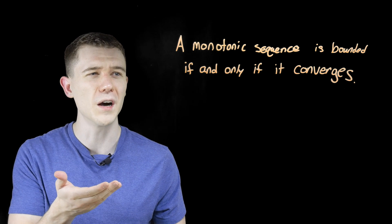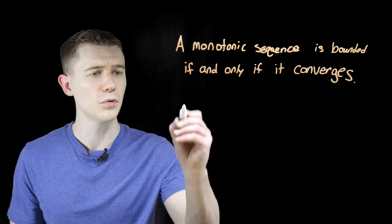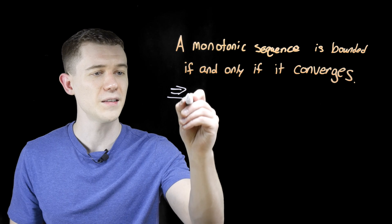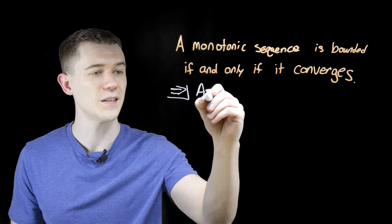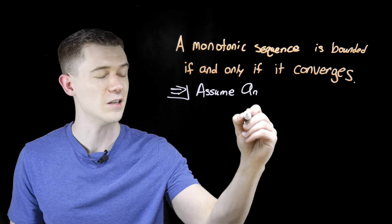What does monotonic mean? Well that means it's only increasing or decreasing. So let's prove this way first. Let's assume we have a monotonic sequence. I'm just going to call it a sub n. This is going to be my sequence.